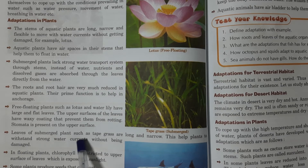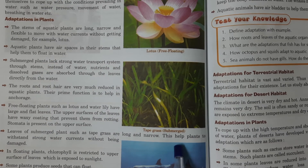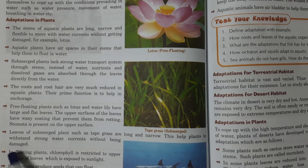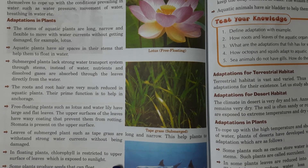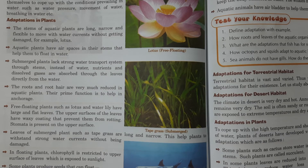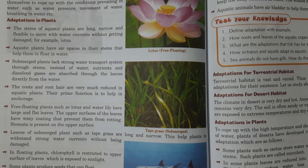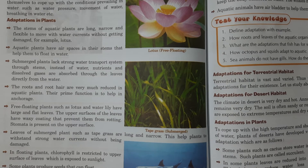Leaves of submerged plants, such as tape grass, are long and narrow. This helps plants to withstand strong water currents without being damaged. Some floating plants have leaves exposed to sunlight on their upper surface, and some plants produce seeds that can float.